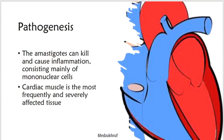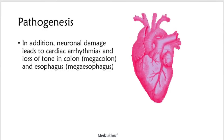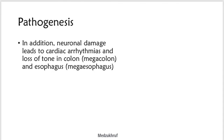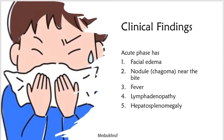Pathogenesis: the amastigotes can kill cells and cause inflammation consisting mainly of mononuclear cells. Cardiac muscle is the most frequently and severely affected tissue. Additionally, neuronal damage leads to cardiac arrhythmias and loss of tone in the colon, leading to megacolon and megaesophagus. During the acute phase there are both trypomastigotes in the blood and amastigotes intracellularly in tissues. In the chronic phase, the organism persists in the amastigote form.